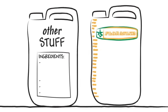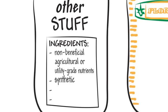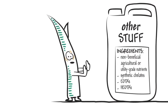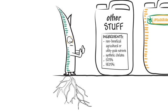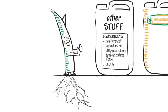Fluorotene foliars do not contain non-beneficial agricultural or utility grade nutrients or synthetic chelates, like EDTAs or HEDTAs, which taste bad and will inhibit my foliar uptake. While those chelates are good for soil applications and may be cheaper, if I'm not absorbing them foliarly, that is more stress for me and could cost more later.